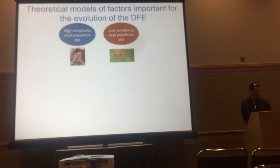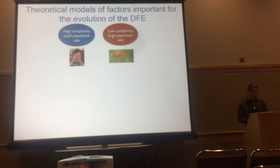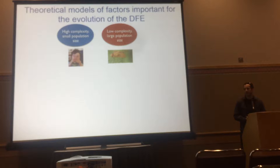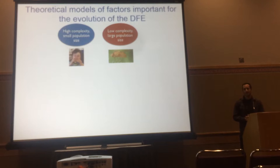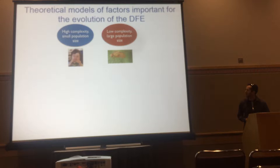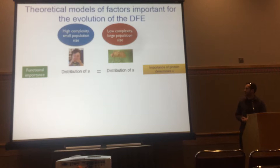To illustrate this, I'll look at two different example species. Consider one species with higher organismal complexity and small population size. Complexity can be hard to define — we can think about numbers of protein-protein interactions, network architecture, or more theoretically the number of phenotypes under selection. We contrast that with a species that has lower complexity and perhaps a larger population size.